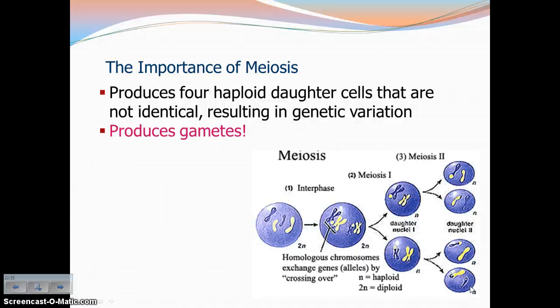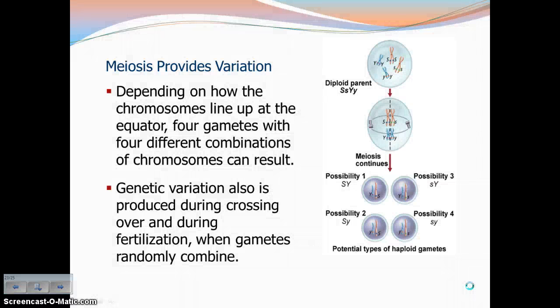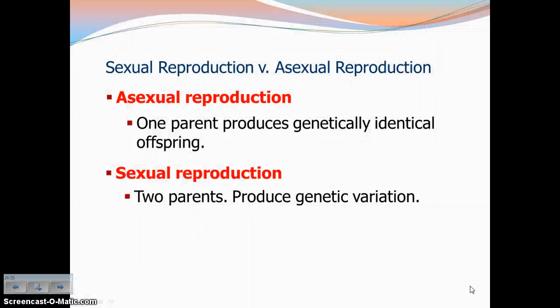Let's summarize the importance of meiosis. Meiosis produces gametes — meiosis produces sex cells. These are four haploid daughter cells that are not identical, which results in genetic variation. Why is genetic variation so important? Depending on how the chromosomes line up at the equator, four gametes with four different combinations of chromosomes can result. This is why you and your siblings don't look exactly alike. This is a result of two things: crossing over, and how the chromosomes line up along the middle of the cell during metaphase. Both of those things result in genetic variation.